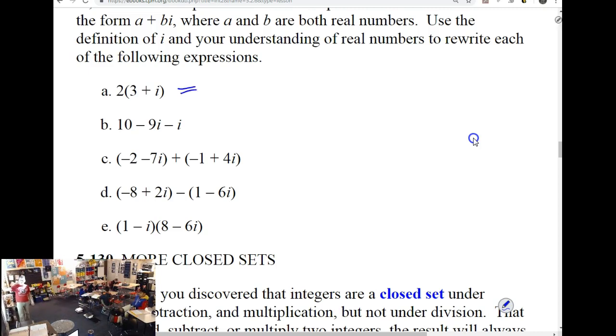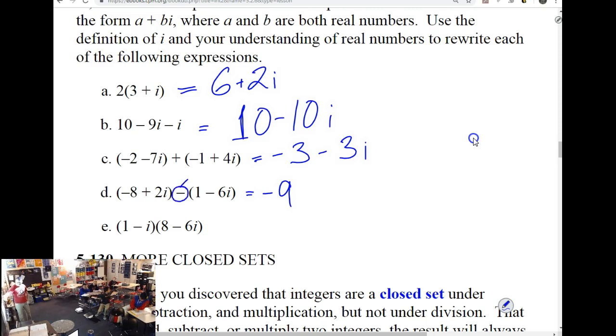What does A turn into? 6 plus 2i. What does B turn into? 10 minus 8i. Careful, negative minus. C is negative 3 minus 3i. D is negative 9 minus 4i. The negative distributes, or you can say the subtraction distributes. Subtraction of a negative adds. You get 8i.